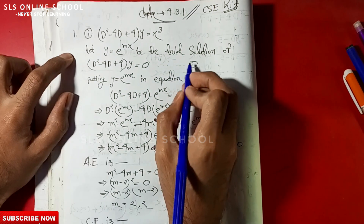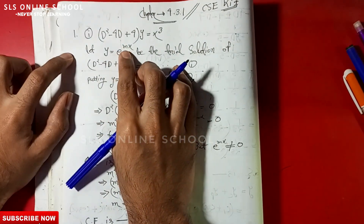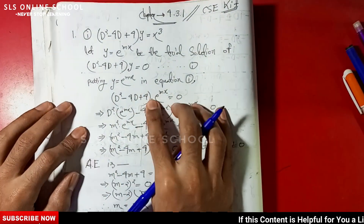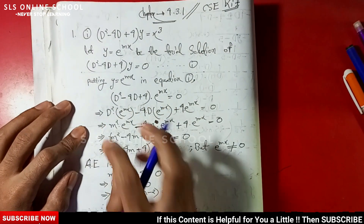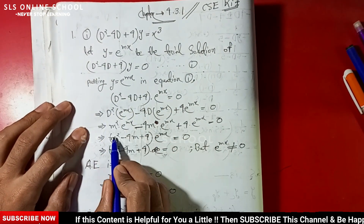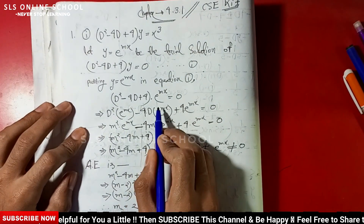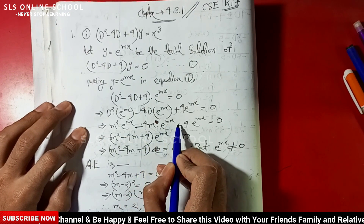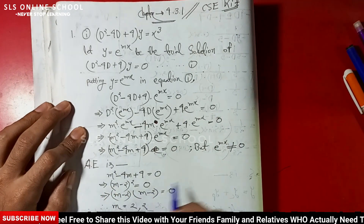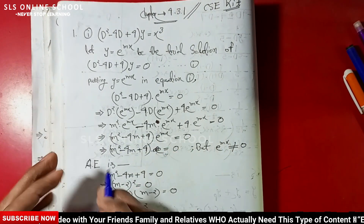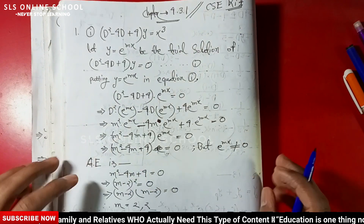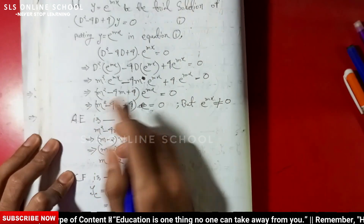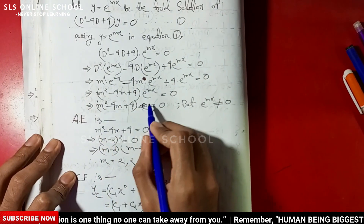This gives us the auxiliary equation, equation number 1. Substituting y = e^(mx), we get the derivatives, and since e^(mx) is not equal to 0, we can divide through. So finally, the auxiliary equation is m² - 4m + 4 = 0.